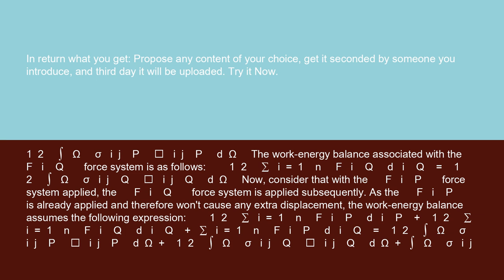The work-energy balance associated with the F_iQ force system is as follows: (1/2) Σ(i=1 to N) F_iQ · D_iQ = (1/2) ∫_Ω σ_ijQ · ε_ijQ dΩ.